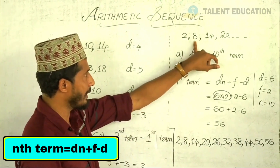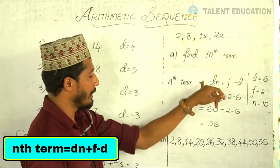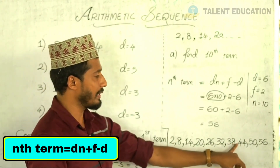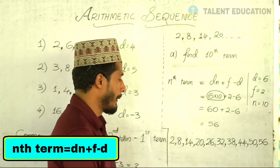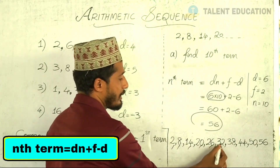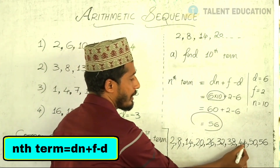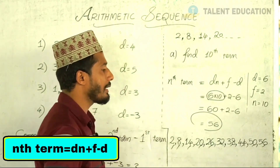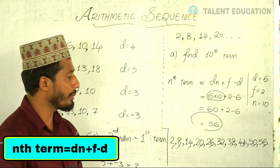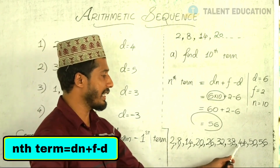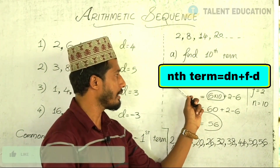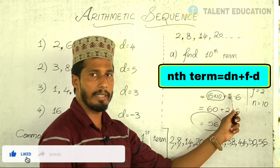2, 8, 14, 20. The sequence continues: 2, 8, 24, 24. The average number — n is equal to d. 60 is equal to d.